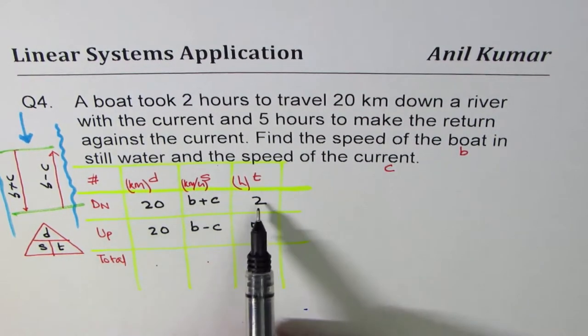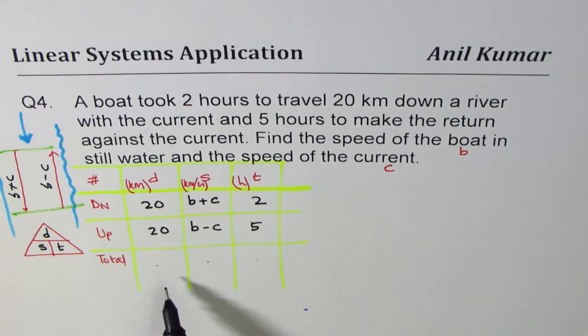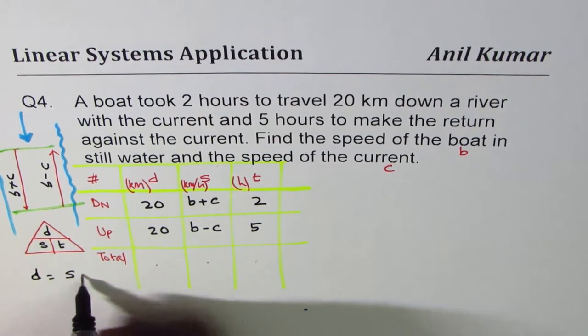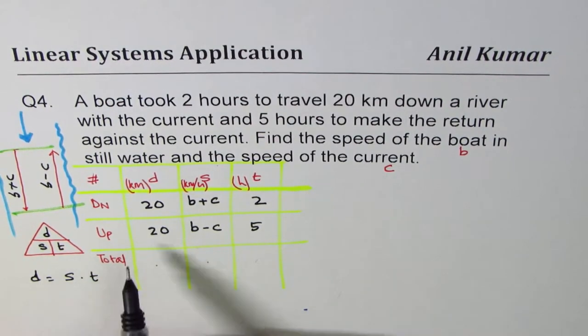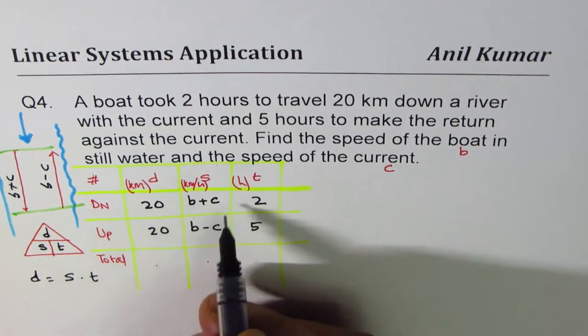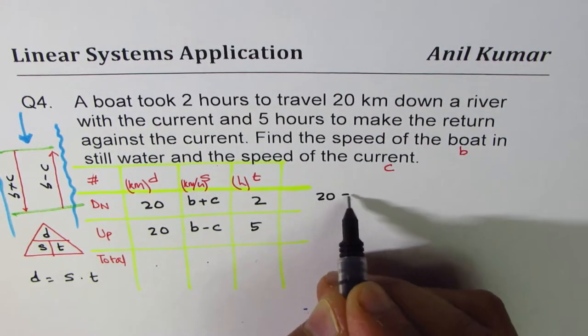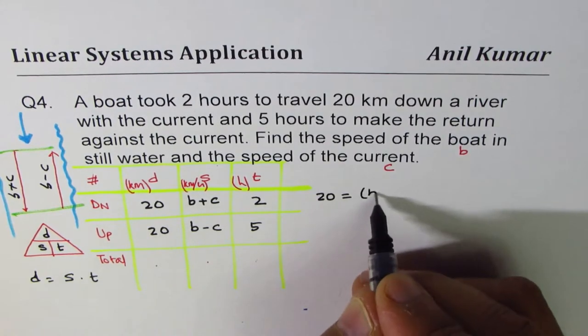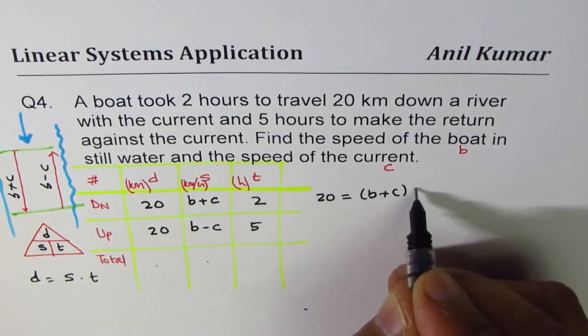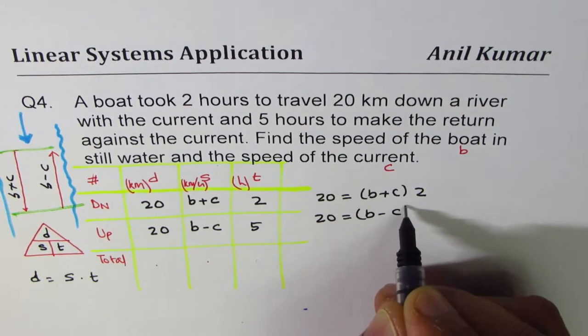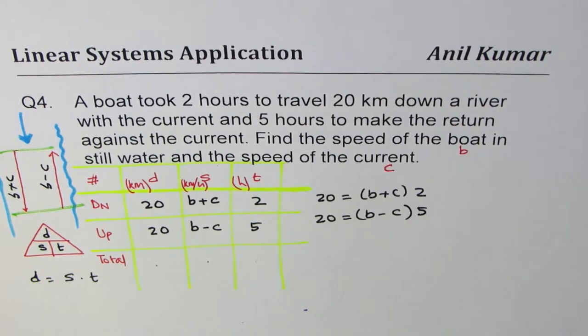How do we relate these three variables? Distance is speed into time. So it says distance is speed into time. So distance is 20. So first equation is from here 20 is speed is B plus C times time of two.